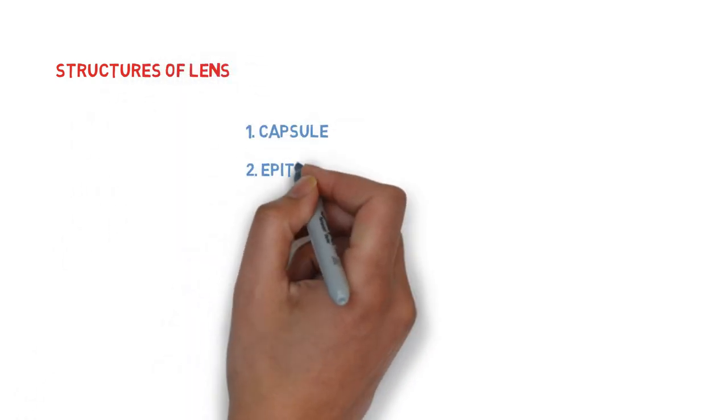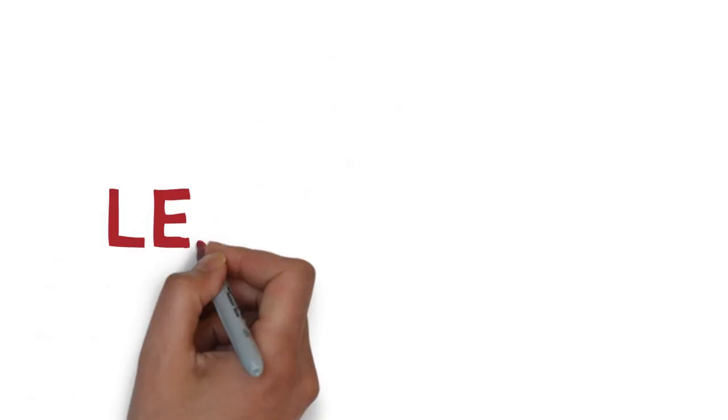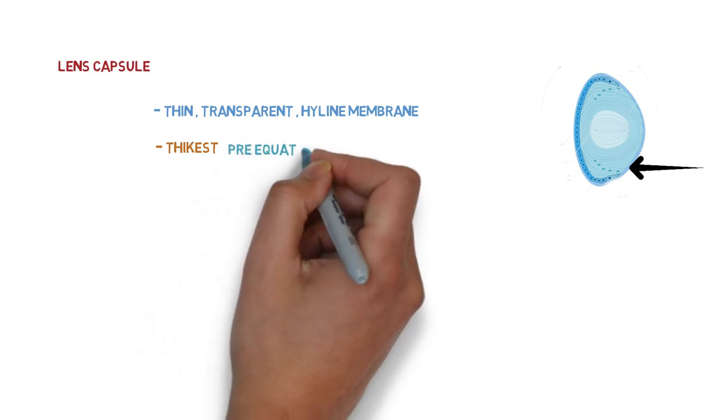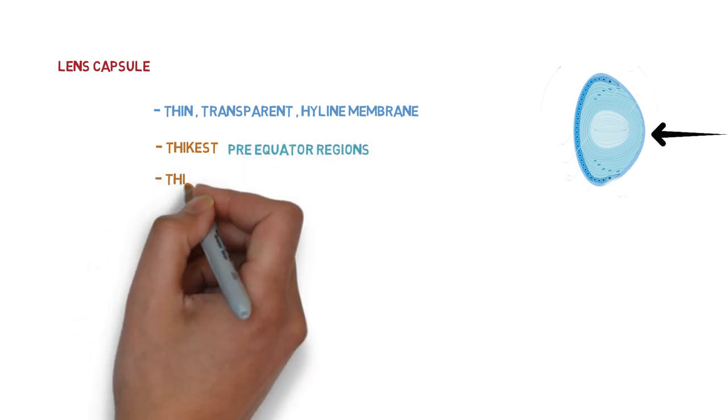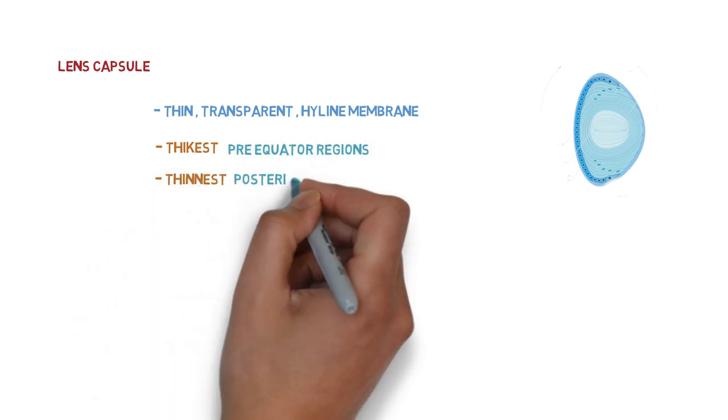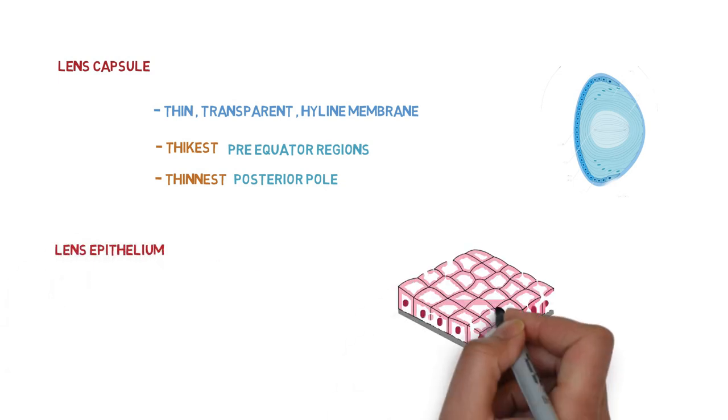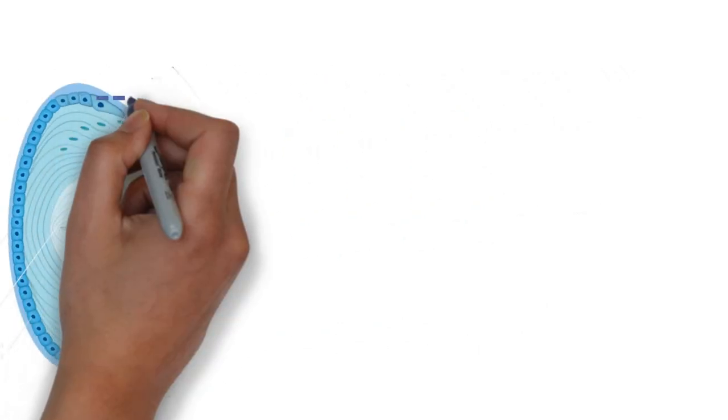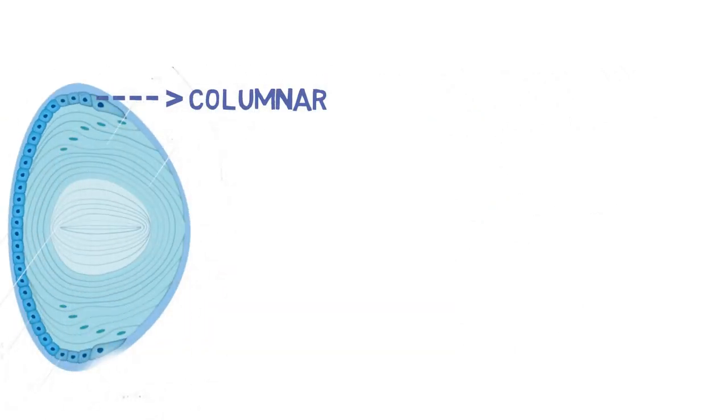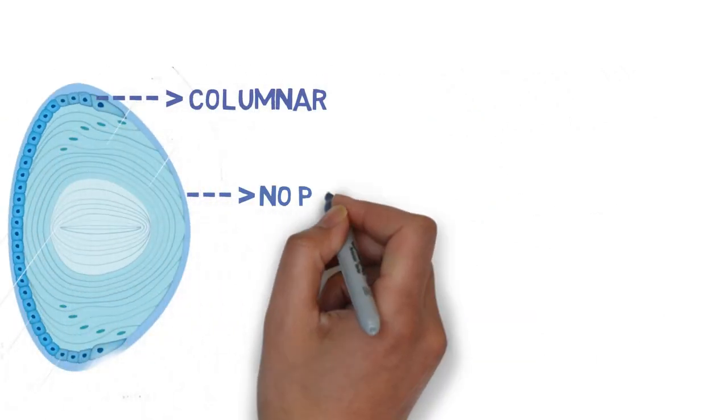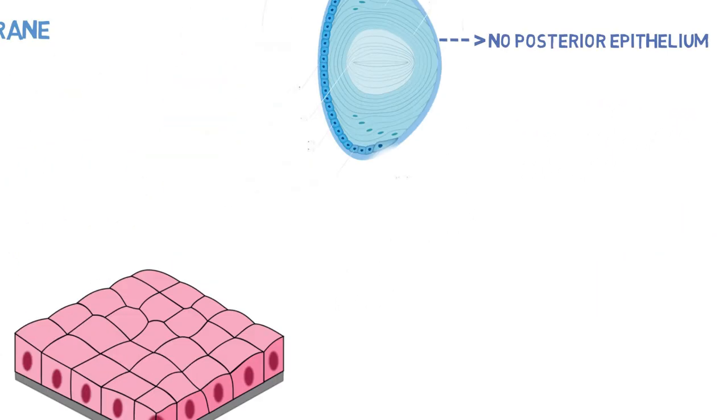The lens consists of lens capsule, lens epithelium, and lens fibers. The lens capsule is a thin transparent hyaline membrane. It is thickest at pre-equatorial regions and thinnest at posterior pole. Lens epithelium is a single layer of cuboidal cells. In equatorial region, these cells become columnar, and at the posterior region there is an absence of epithelium.